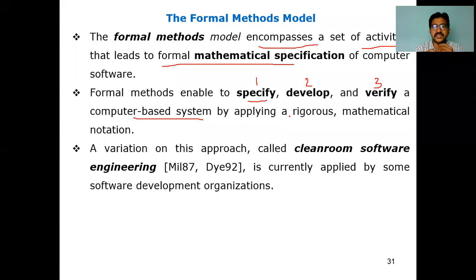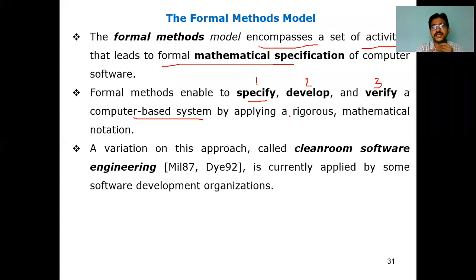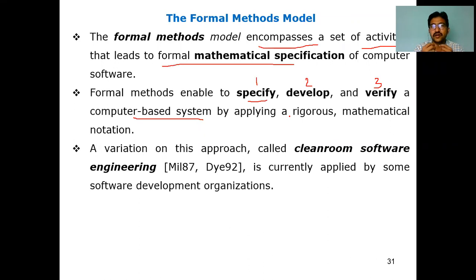The algorithm specifies how many looping statements you are going to use, where you are going to check conditions — all the base structure for a program. In the same fashion, formal methods deal with a mathematical specification or mathematical model which gives a correct way to verify whether the model you are proposing is performing its activities in the correct order.